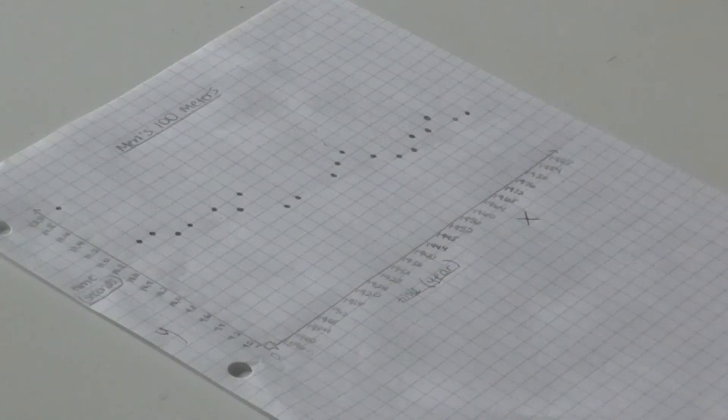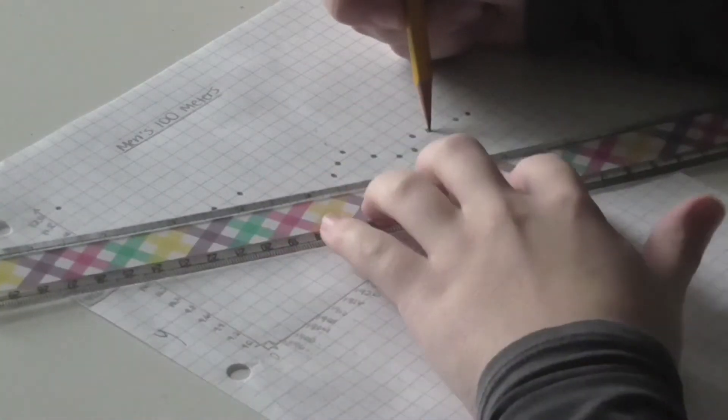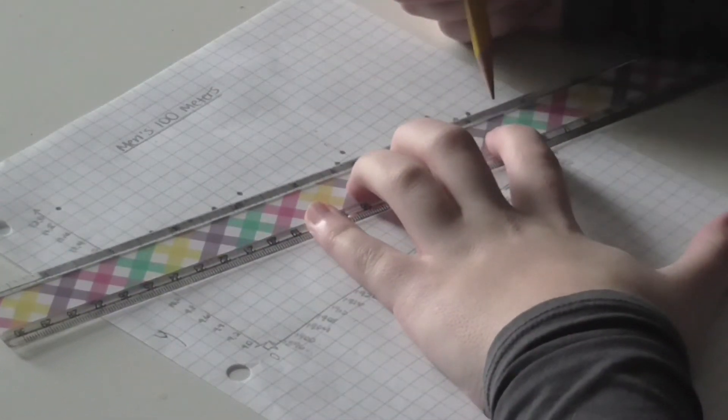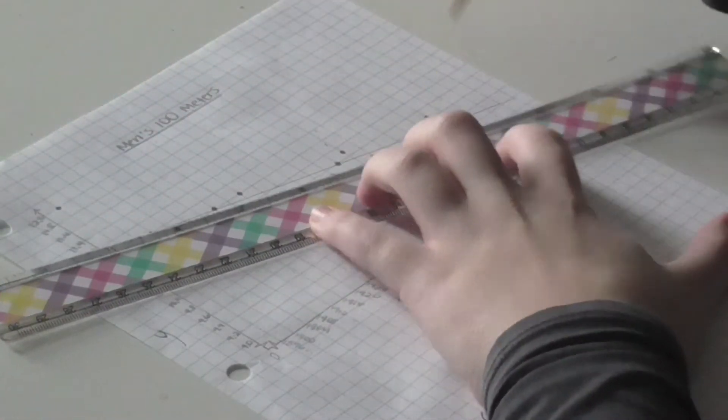To find the line of best fit, we looked at the graph and sketched a line that went through several of the points. Two of the points it went through are 1972, 10.14, and 1976, 10.06.